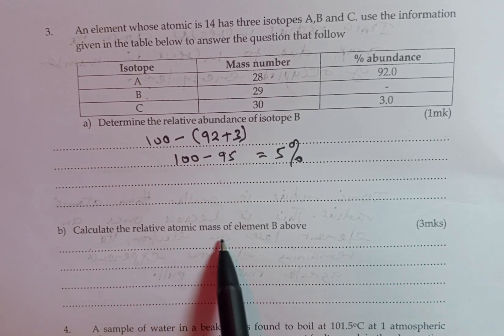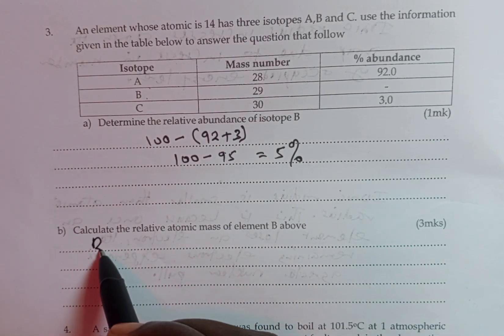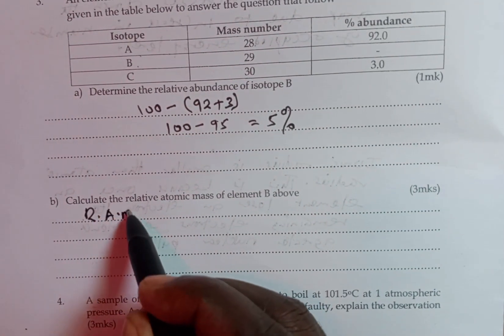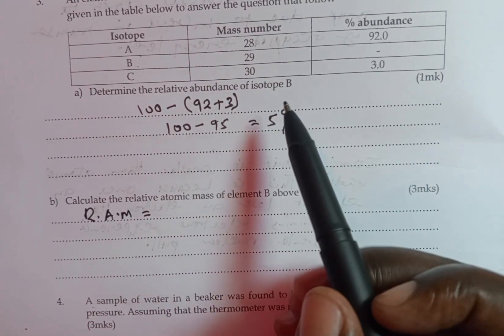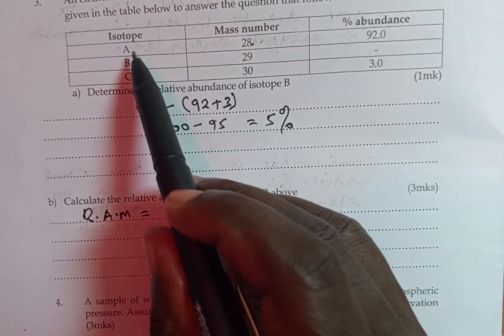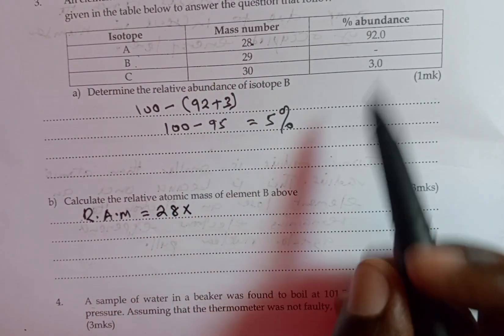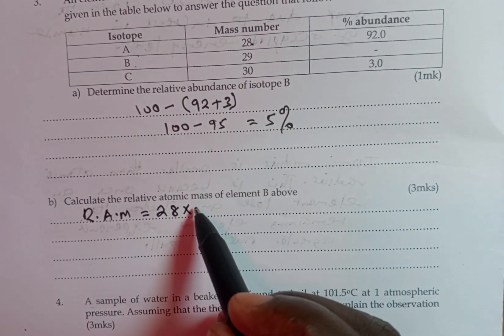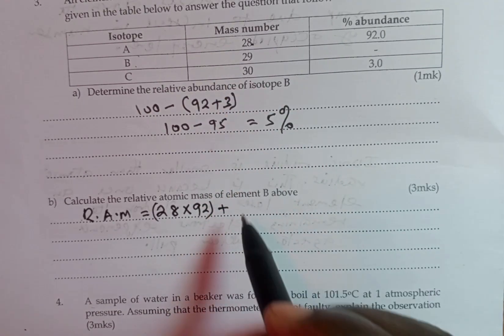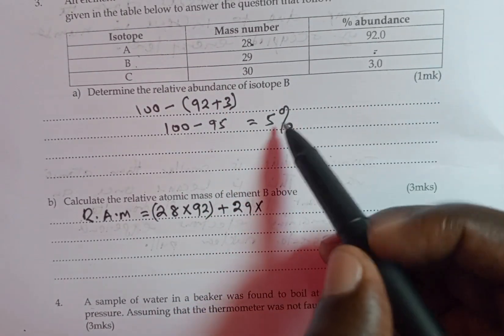Calculate the relative atomic mass of element B. And this one is going to be very simple. Relative atomic mass is going to be equivalent to the average of the 3. That is, we take the mass number of the first one, which is 28. We multiply by the percentage abundance of 92. We add 29 multiplied by the percentage abundance of 5%.